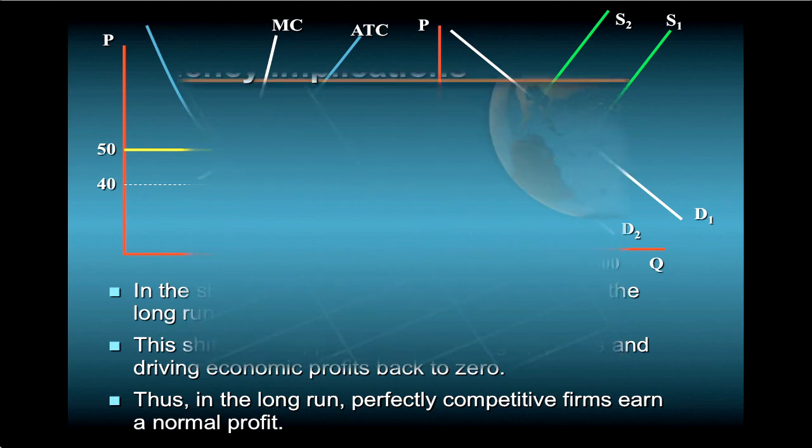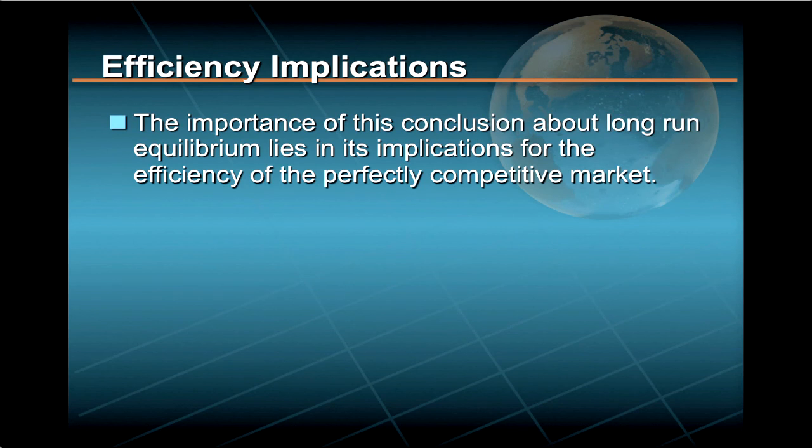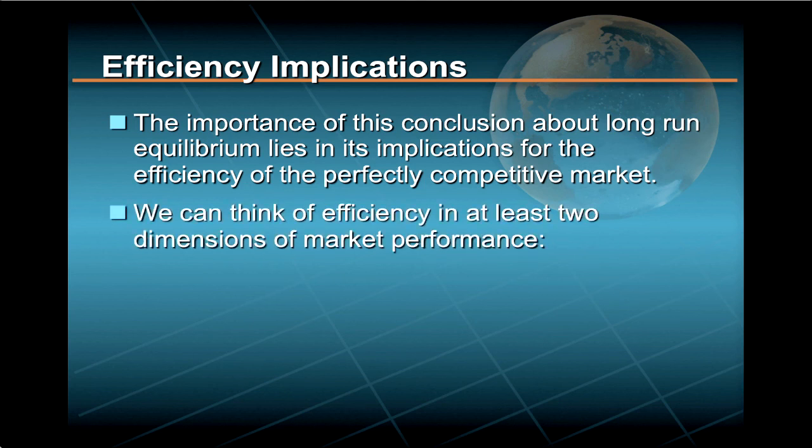The importance of this conclusion about long-run equilibrium lies in its implications for the efficiency of the perfectly competitive market. We can think of efficiency in at least two dimensions of market performance: allocative efficiency and productive efficiency.